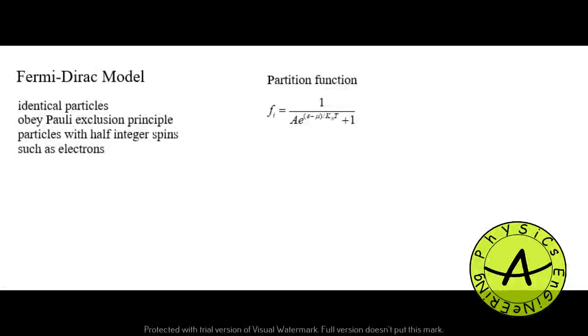Fermi-Dirac statistics is a type of quantum statistics that applies to the physics of a system consisting of many identical particles obeying the Pauli exclusion principle, such as electrons and protons. As a result, each state is occupied with only one particle in Fermi-Dirac statistics.